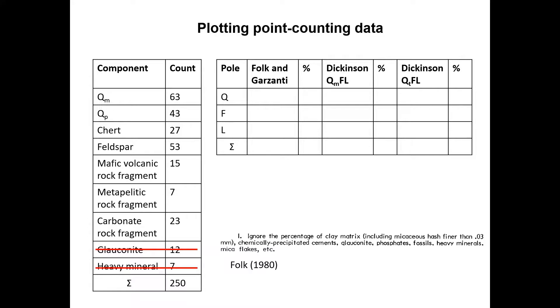Then the Q-pole comprises all monocrystalline and all polycrystalline quartz grains, so 106 counts in our case. The F-pole is easy; it's just the sum of feldspar grain counts. The L-pole comprises all lithic fragments, including chert, so 72 counts in total. This gives us a new sum of 231.